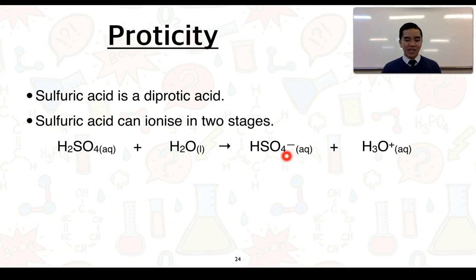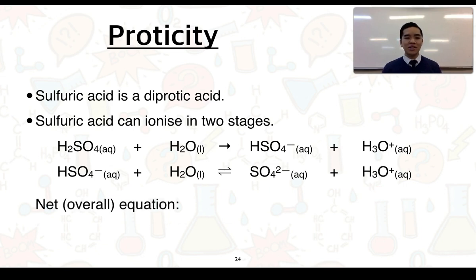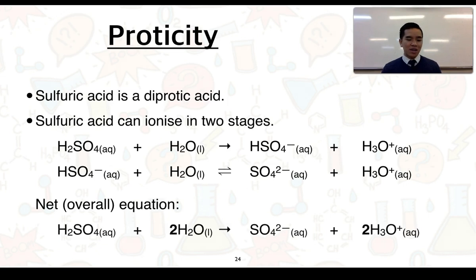The hydrogen sulfate ion has another hydrogen that can be donated, but because it is negatively charged this occurs less readily — it is a more reversible process. In the second stage, HSO₄⁻ donates a proton to water, forming the sulfate ion (SO₄²⁻) and another hydronium ion. These two stages can be summed into a net overall equation: H₂SO₄ + 2H₂O → SO₄²⁻ + 2H₃O⁺, showing that a diprotic acid can produce potentially twice as many hydronium ions as a monoprotic acid.